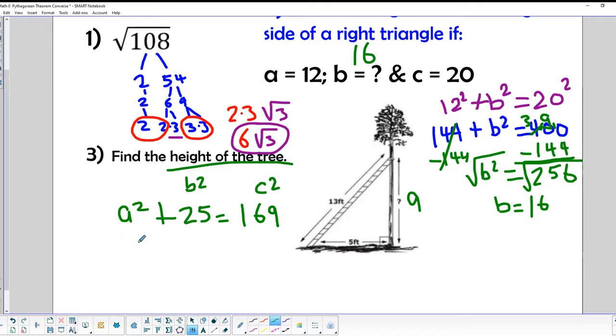So to find A squared, we've got to do minus 25 on both sides. And that comes out to be 144. So A squared equals 144. And I know that if I unsquare A squared, I get A. And if I unsquare 144, I get 12. So this would be 12 feet tall on that tree.